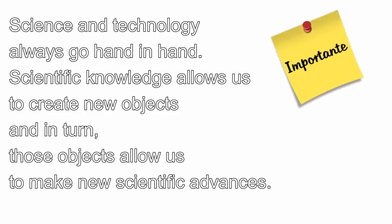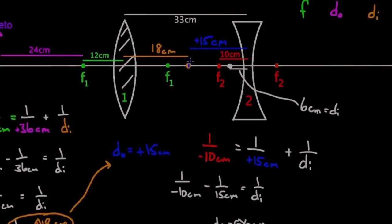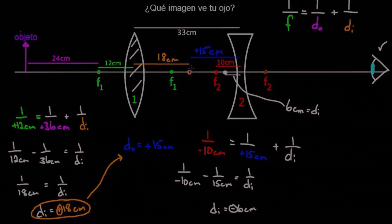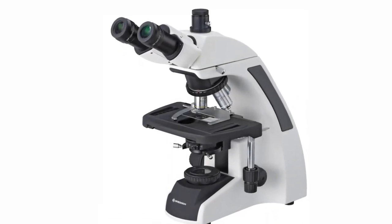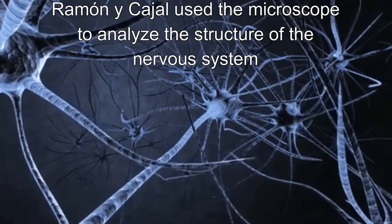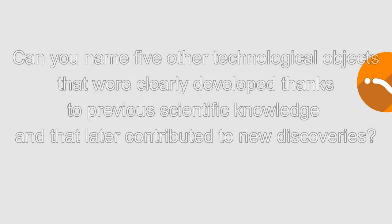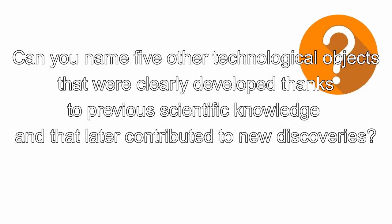Science and technology always go hand in hand. Scientific knowledge allows us to create new objects. For example, the study of optics allowed us to create better microscopes, and in turn, microscopes allowed us to make new scientific advances. Can you name five other technological objects that were clearly developed thanks to previous scientific knowledge and that later contributed to new discoveries?